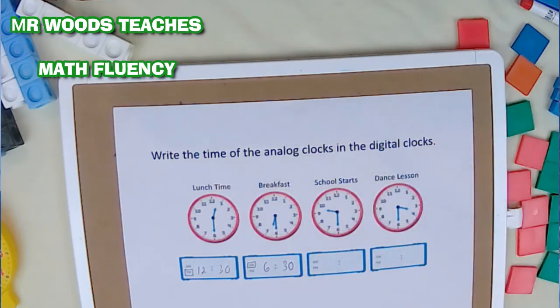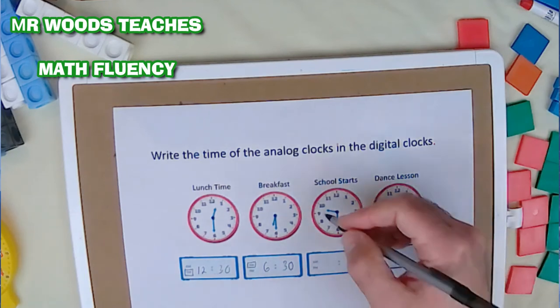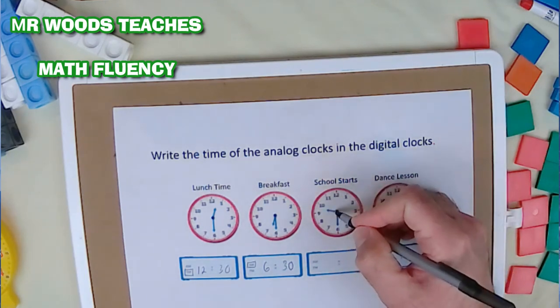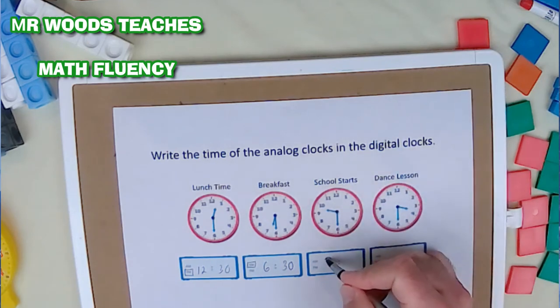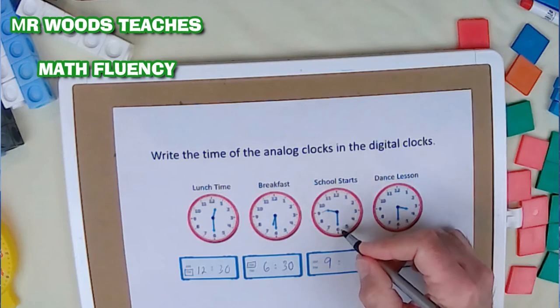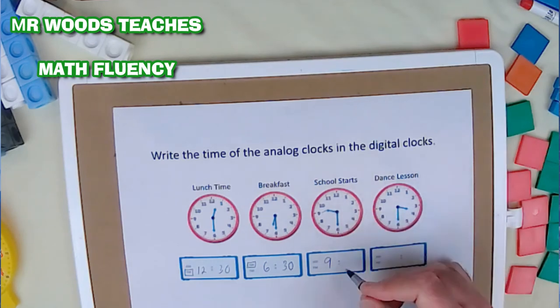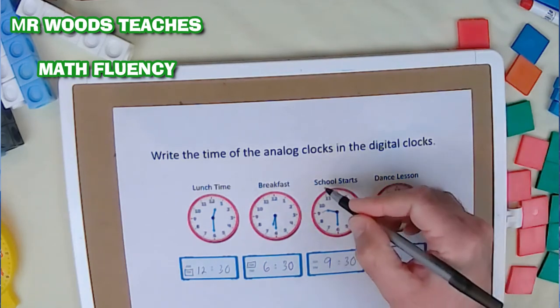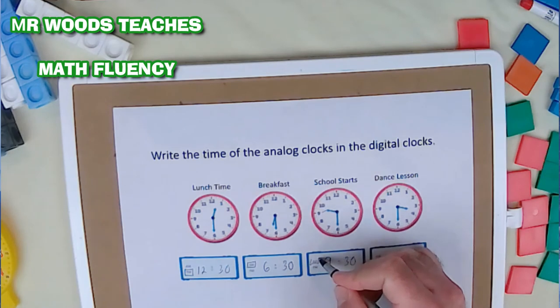School starts. School starts usually in the morning. Yeah. So I'm going to look at this again. The hour hand is pointing between the 9 and the 10. So that's going to tell me it's 9 because I go to the number before. And then the minute hand is pointing at the 6, 30. And school starts usually starts in the morning. I'm going to circle AM.